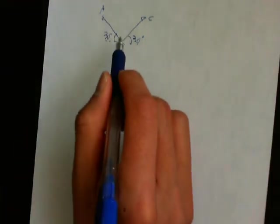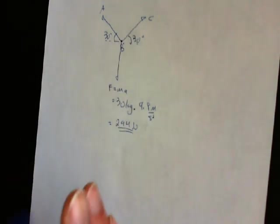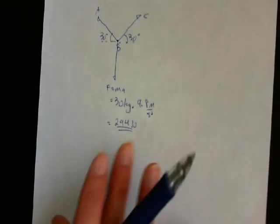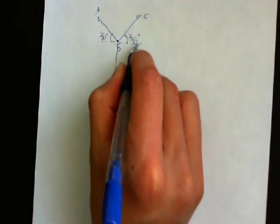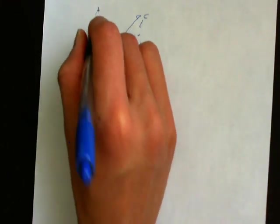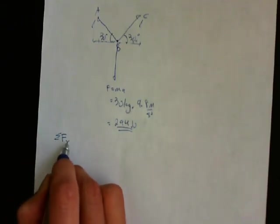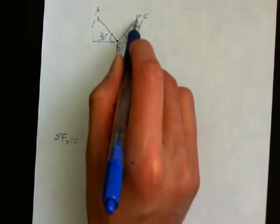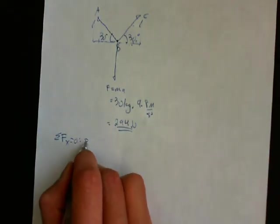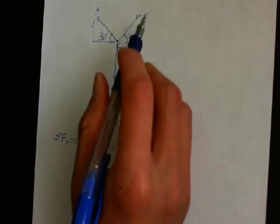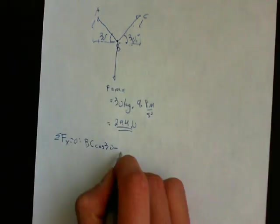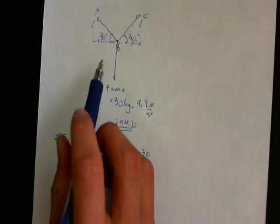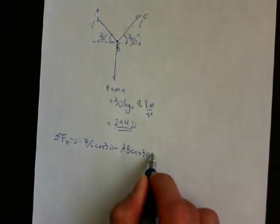So to solve for this system, we sum the forces in X and Y and set them equal to zero. Here's the X component, Y component. Sum the forces in X equals zero. BC adjacent over hypotenuse, so BC cosine 30 minus AB cosine 30. It's minus because this force is going to the left, equal to zero.